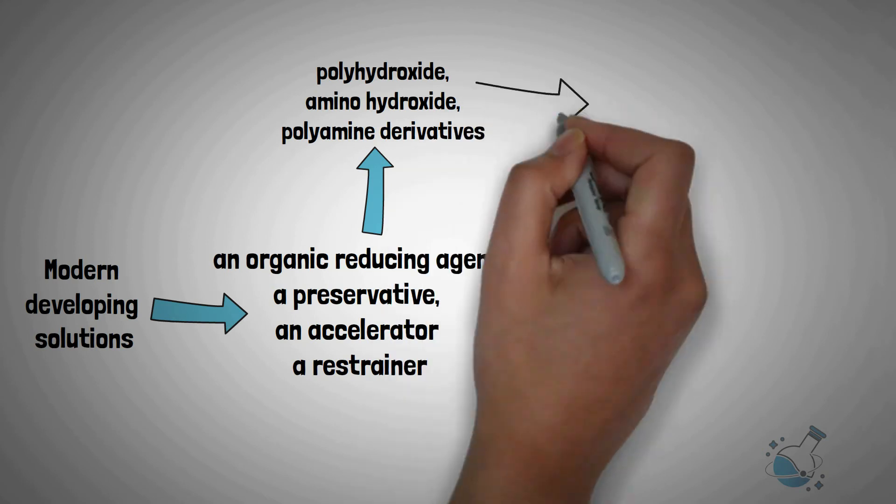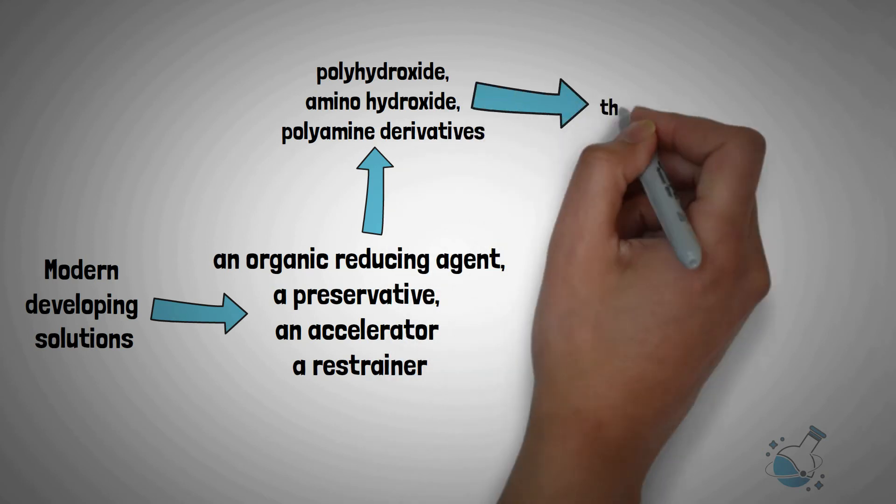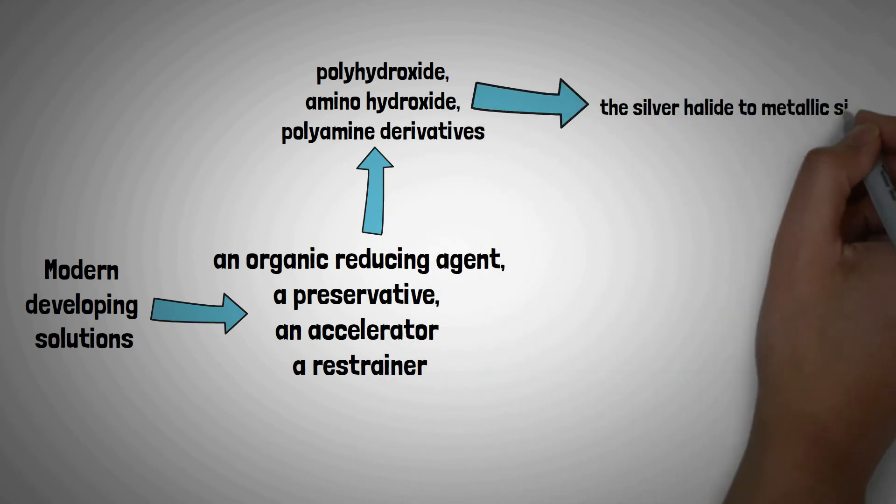The reducing agent chemically reduces the silver halide to metallic silver. Chemically, they are substances like polyhydroxide, amino hydroxide, polyamine derivatives, etc.